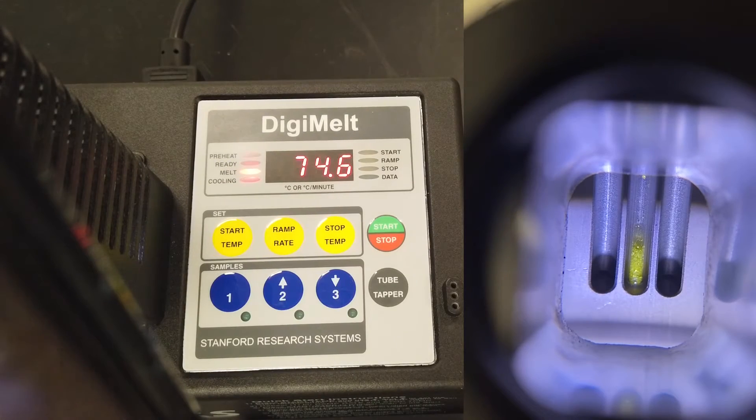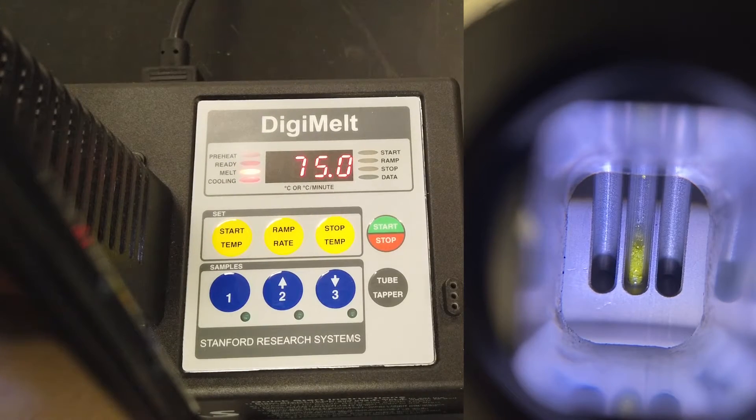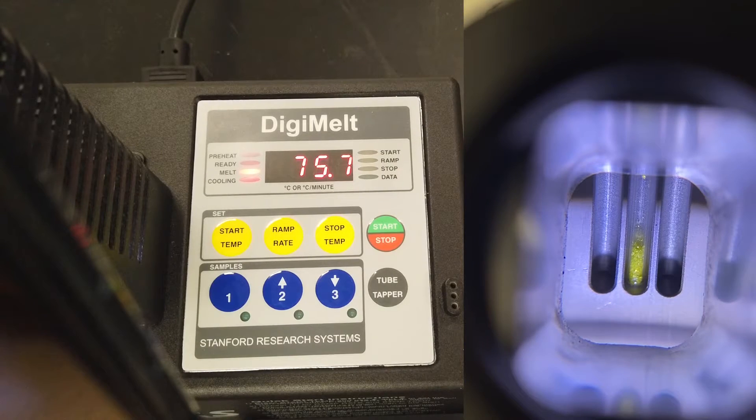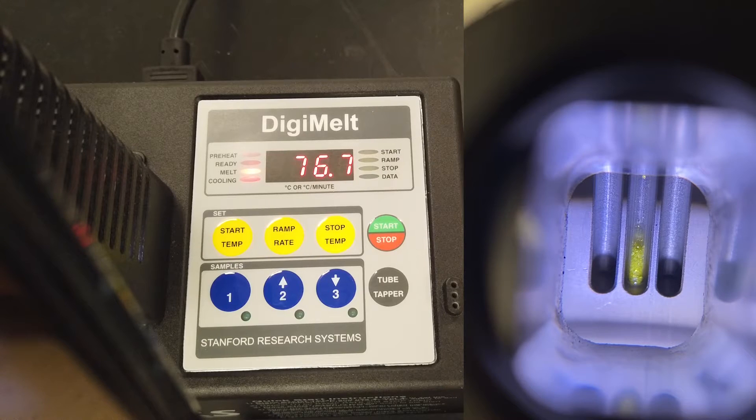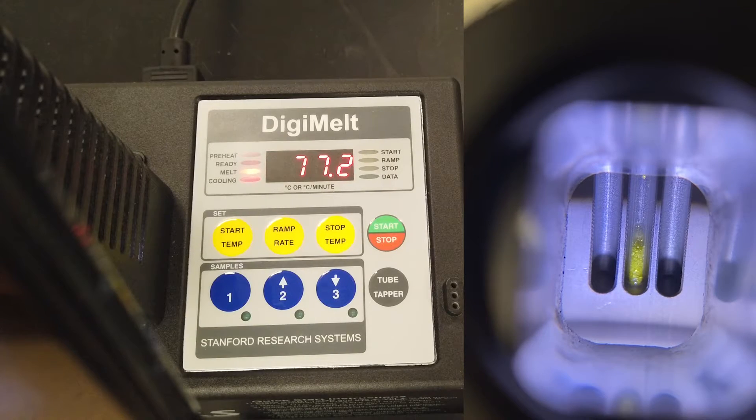Melting point range. The melting point is a physical property of a solid and can be used to help identify a substance. In practice, a solid usually melts over a range of temperatures rather than at one specific temperature. For this reason, it's more useful to speak of a melting point range.